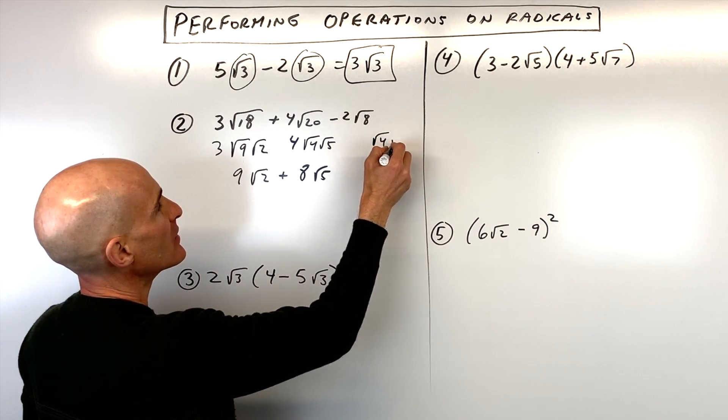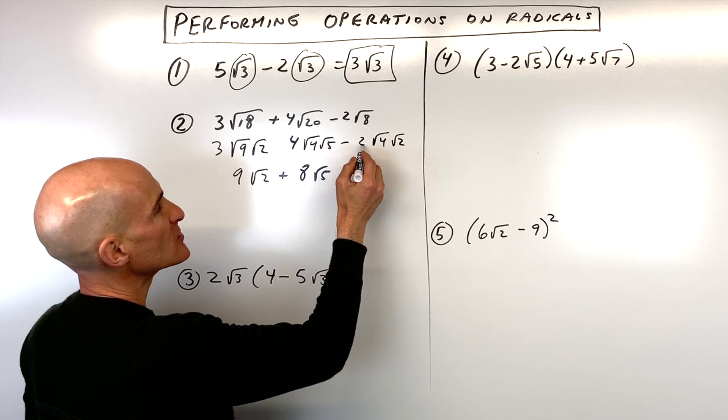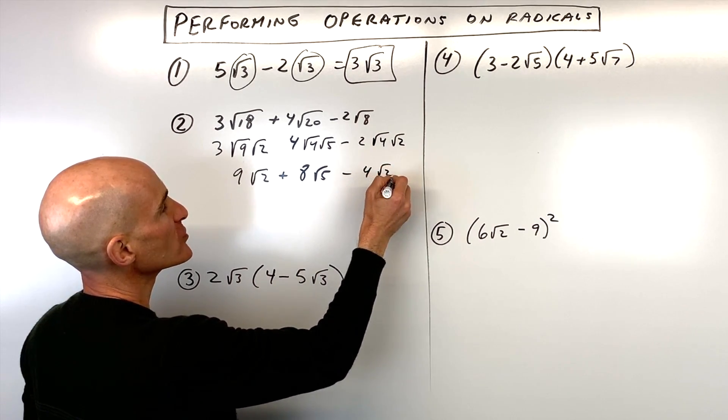And then here, square root of eight is, again, four times two. And then we have this two. So square root of four is two times two is four. So minus four square root of two.